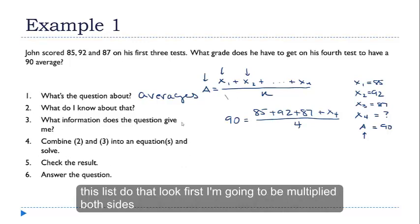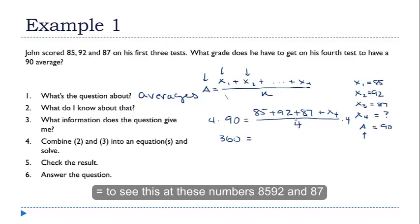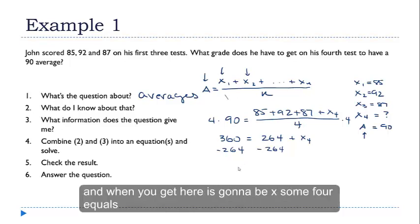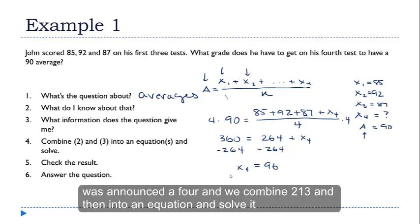An equation that I can solve. First, I'm going to multiply both sides by 4. I get 360 equals - let's add these numbers, 85, 92, and 87. 5 and 2 is 7, plus 7 is 14. 264 plus X of 4. So I got one more step. Subtract 264 from both sides. And what do you get here? It's going to be X sub 4 equals 96. So there's the grade that he needs to balance out the other 3.